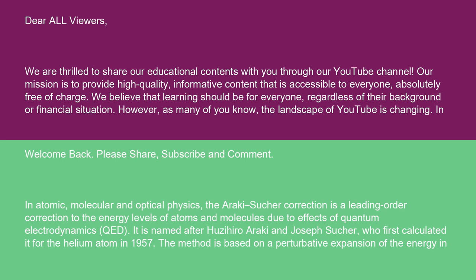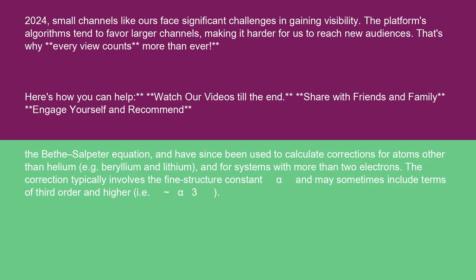The method is based on a perturbative expansion of the energy in the Bethe-Salpeter equation, and has since been used to calculate corrections for atoms other than helium, e.g. beryllium and lithium, and for systems with more than two electrons.